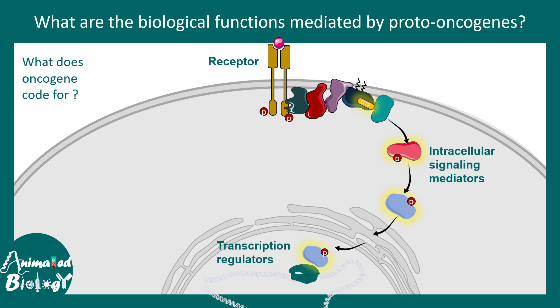Proto-oncogenes can code for any component of these pathways. For example, a proto-oncogene can code for a receptor, an intracellular signaling pathway mediator like a kinase enzyme, or a transcriptional regulator. Proto-oncogenes are critically important because if mutations cause overproduction of these components or dysfunction, it is detrimental to normal growth and proliferation control.